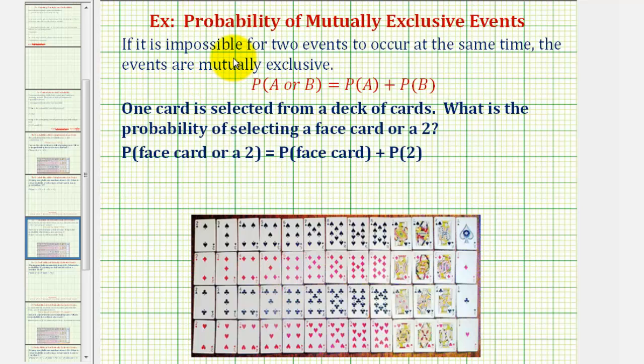Welcome to two examples of determining probability of mutually exclusive events. If it is impossible for two events to occur at the same time, the events are called mutually exclusive.